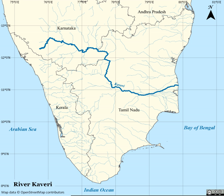The Kaveri Basin is estimated to be 81,155 square kilometres (31,334 square miles), with many tributaries including Harangi, Hemavati, Kabini, Bhavani, Arkavati, Lakshmana Tirtha, and Noyal. The river's basin covers three states and a union territory: Tamil Nadu at 43,856 sq km, Karnataka at 34,273 sq km, Kerala at 2,866 sq km, and Puducherry at 160 sq km.